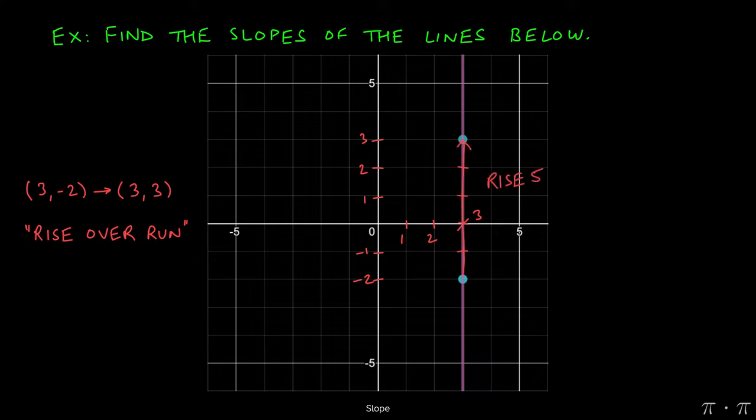Here, it's easier to observe that there's a rise of five units because I have to climb five units up in order to get to this point. But I don't have to move left or right. So there is no run in this case.